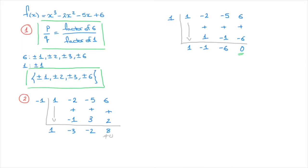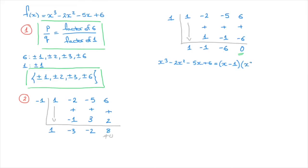The factor theorem also allows us to state that x minus 1 is a factor of this polynomial function. In other words, we can write that x cubed minus 2x squared minus 5x plus 6 equals x minus 1 times some other polynomial. From synthetic division, that other polynomial is the quotient function, whose coefficients are 1, negative 1, and negative 6 — which gives us the quadratic x squared minus x minus 6.